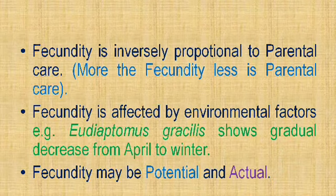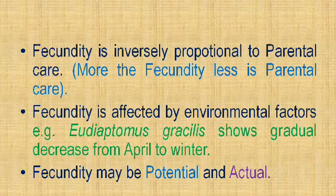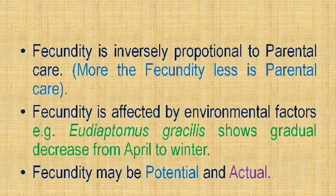The same concept applies to fecundity. The figure calculated by scientists in laboratory conditions — where the animal receives proper food, optimal temperature, and all other factors at optimum level — is called potential fecundity. Actual fecundity is the figure obtained in the natural habitat of the animal, affected by diet, environmental conditions, food availability, and other factors. The actual figure is always lower than the potential figure.